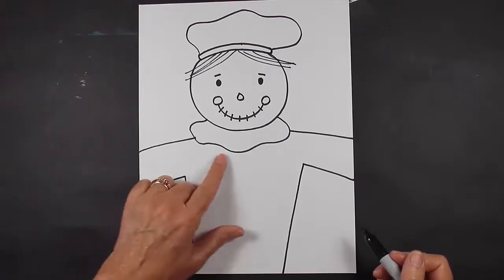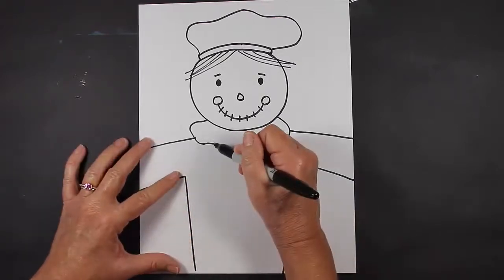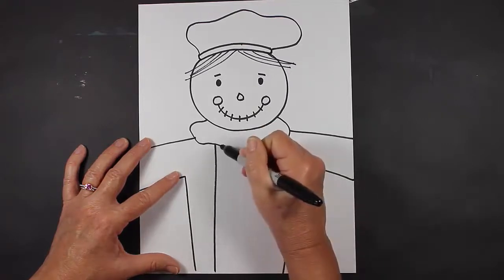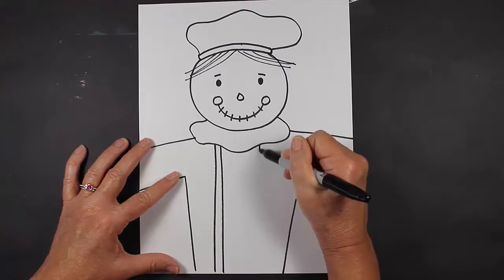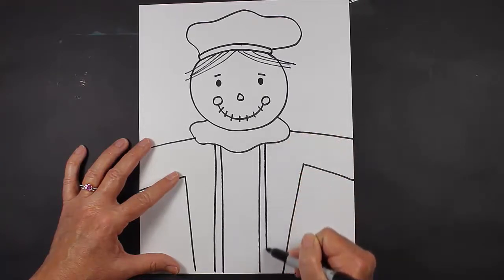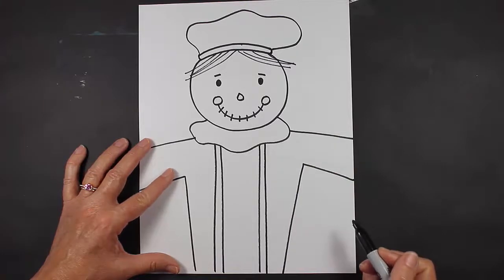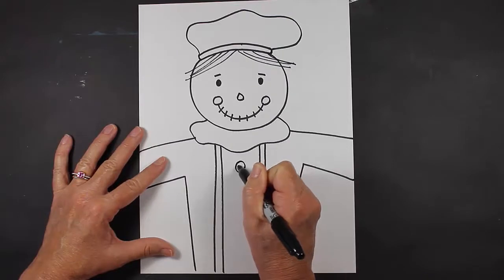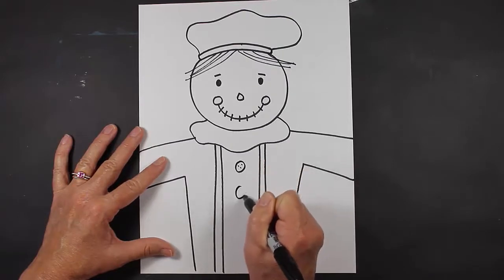Now we're going to put some overalls on our scarecrow. Those are just going to be some lines coming down like this, all the way down to the end of your paper. If you'd like to put some buttons here or a patch, you can go ahead and do that. I think I'm going to put some buttons.